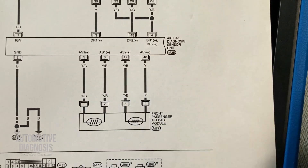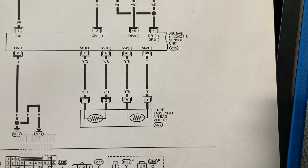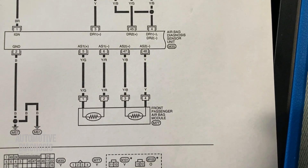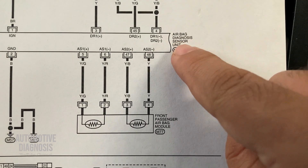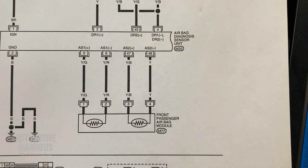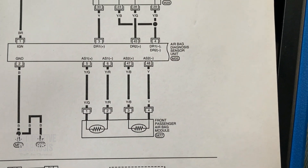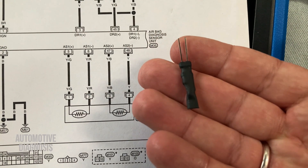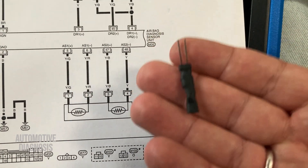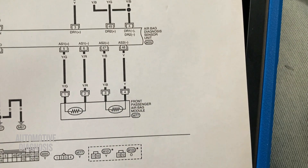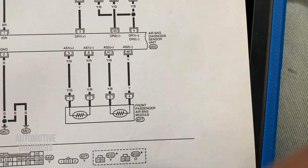After checking the wiring, if you still don't find any fault, you might need to proceed with replacing the airbag control unit. Let's start — I'm going to simulate the airbag by putting the dummy resistor inside the connector, then try to erase the code to see if it goes away.